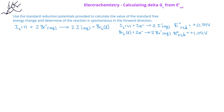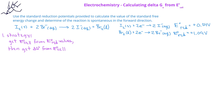In this problem, we're asked to use the standard reduction potentials provided to calculate the value of the standard free energy change and to determine if the reaction is spontaneous in the forward direction. The reaction given is that I₂ solid reacts with two bromide ions in the aqueous phase to produce two iodide ions in the aqueous phase and bromine liquid. We recognize that we're given the standard reduction potentials for iodine and bromine, from which we can get the standard cell potential and then the standard free energy change.